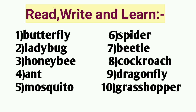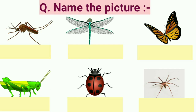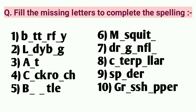Read, write and learn all the spellings of insects. The next worksheet is to name the picture — recognize the picture and fill in the correct spelling in the given box. The next worksheet is for filling in missing letters. Fill the missing letters to complete the spelling of insects.